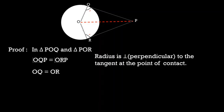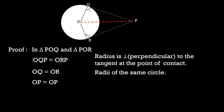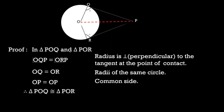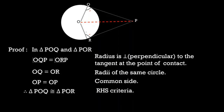OQ is equal to OR as they are radii of the same circle. OP is equal to OP as it is the common side of triangles POQ and POR. By RHS criteria, triangle POQ is congruent to triangle POR. RHS theorem is the Right Angle Hypotenuse Side theorem: if the hypotenuse and a side of one triangle are respectively equal to the hypotenuse and a side of another triangle. Here, OP is the hypotenuse of both triangles POQ and POR, and OQ equals OR. Therefore, triangle POQ is congruent to triangle POR. For this step, you will get half a mark.